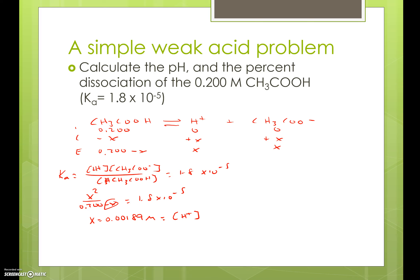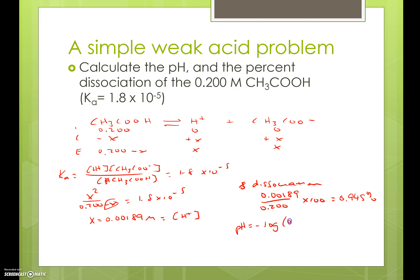Now we want to make sure that our 5% rule is followed. We calculate our percent dissociation by taking x, which is 0.00189, divided by our original concentration of 0.200, multiplied by 100. That gives us 0.945% dissociation — less than 5%, so we can assume that x is insignificant relative to our original concentration. The pH of the solution is the negative log of our hydrogen ion concentration: negative log of 0.00189, which gives us a pH of 2.72.